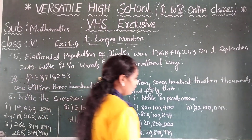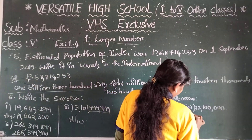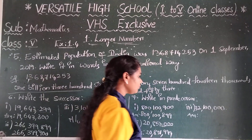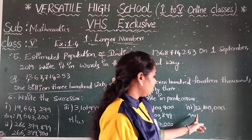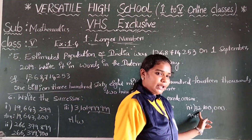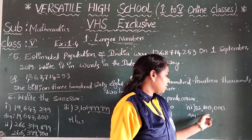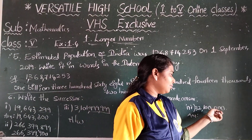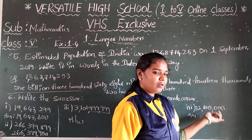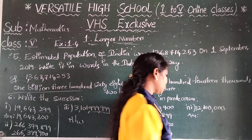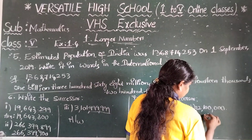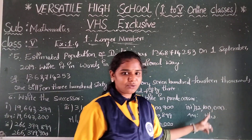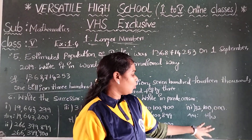Next, the third number: 32,100,000. Write the predecessor. This number is also homework — write the before number as homework.